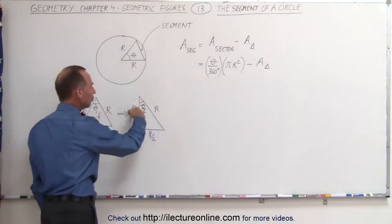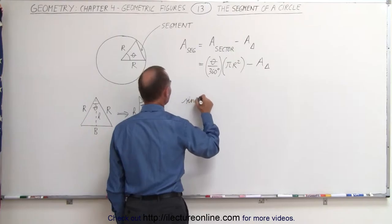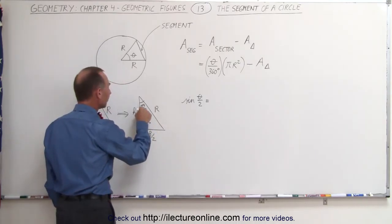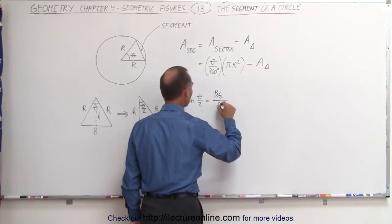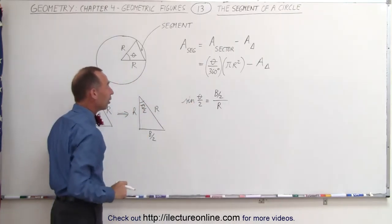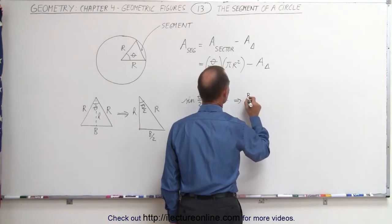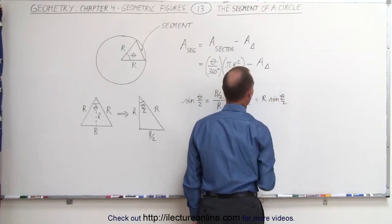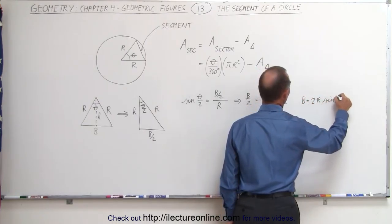Now we're going to relate these using trig functions. Using sine: the sine of theta divided by 2, by definition, is equal to the opposite side over the hypotenuse — that is b over 2, divided by r. This means b divided by 2 equals r times sine of theta over 2, and multiplying both sides by 2 gives us b equals 2r times sine of theta over 2.